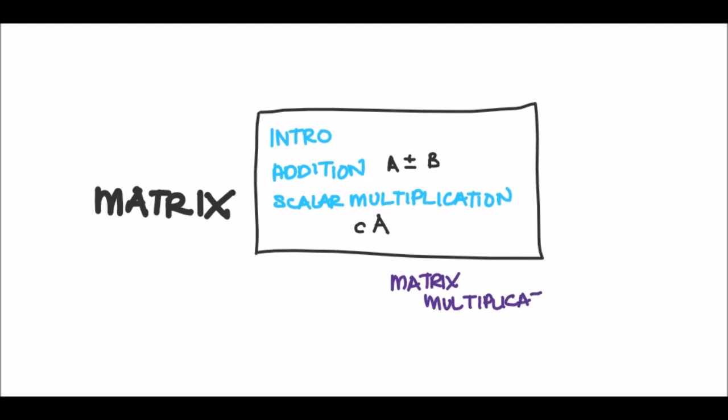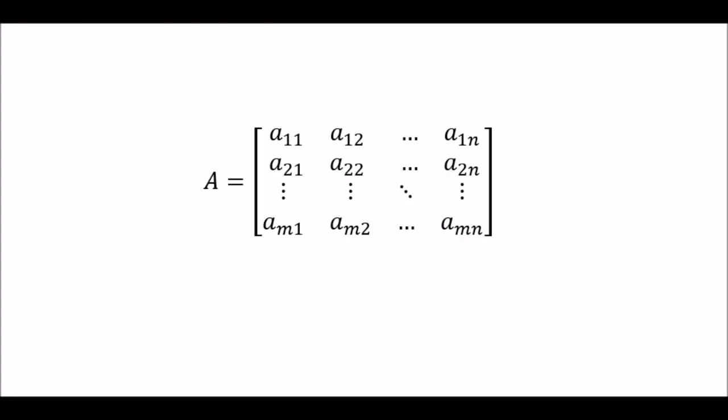This is a bit difficult. It's not so straightforward because, for example, we have matrix A and matrix B, how do we multiply two matrices together? Because this one, scalar multiplication, is easy because we are dealing with a number and a matrix, but here we have two matrices.